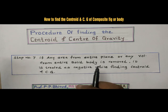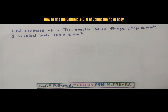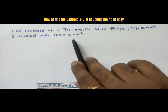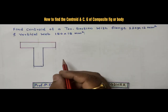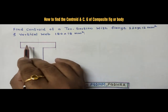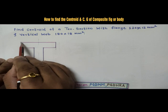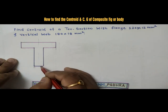So, let us try to solve one example based on the centroid. Find the centroid of a T-section with flange 120 by 12 mm and vertical web 180 by 18 mm. Let us draw the T-section with the given dimensions. The horizontal part is called the flange — 120 mm wide and 12 mm thick — and the vertical web has height 180 mm and width 18 mm.